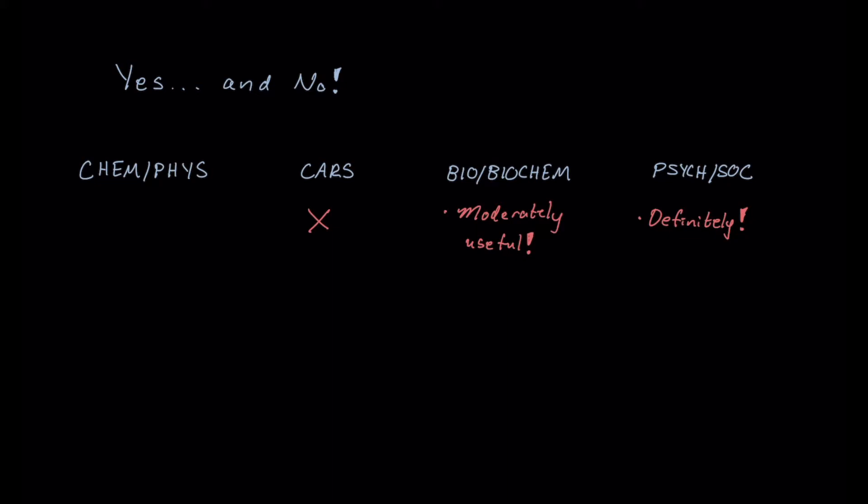Now for biochemistry, I would also say it's moderately useful because there are things, for example, like glycolysis and the Krebs cycle, where it can be useful to use Anki's image occlusion feature. And I'll put a link to that video down in the description below as well, where you can see the whole pathway and then test yourself on specific parts of the pathway by occluding or covering up part of the pathway.